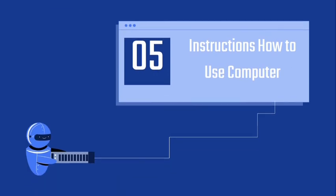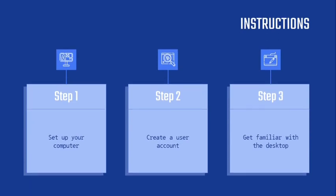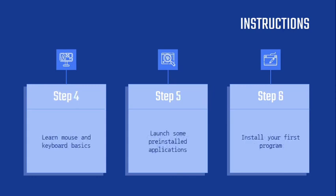The fifth is instructions on how to use a computer. You can follow these steps. Step one, set up your computer. If you haven't set up this computer, you must set it up. Step two, create a user account. Step three, get familiar with the desktop. Step four, learn mouse and keyboard basics — this is very important for students and teachers. Step five, launch some pre-installed applications. And step six, install your first program.